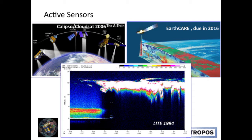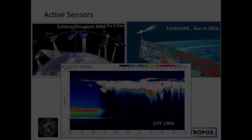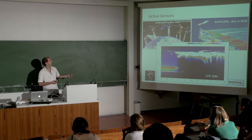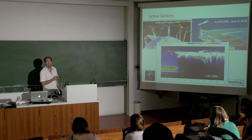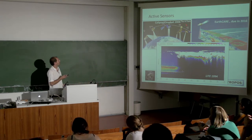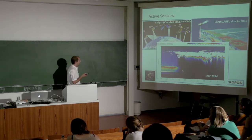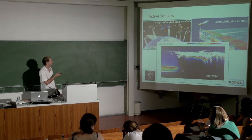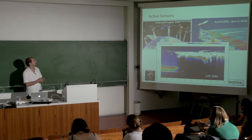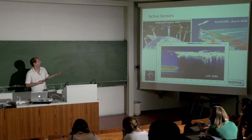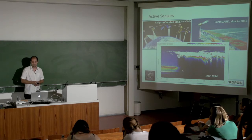CloudSat/CALIPSO launched in 2006 and they're still going, even though the instruments have come into some problems. If you look at the whole mission concept, it's not only about CloudSat and CALIPSO but this whole train of instruments — called the afternoon train because it flies in an afternoon orbit at 1:30 PM equator crossing time in a sun-synchronous orbit. You have Aqua with MODIS, other spectral instruments looking at trace gases, offering a whole range of combined measurements.